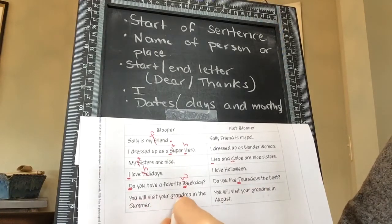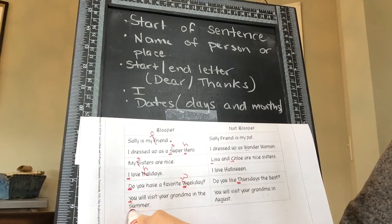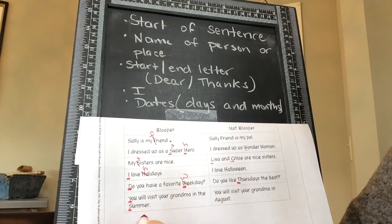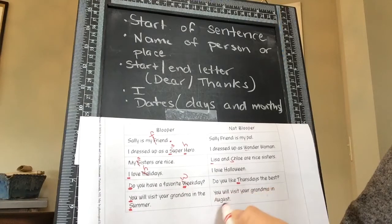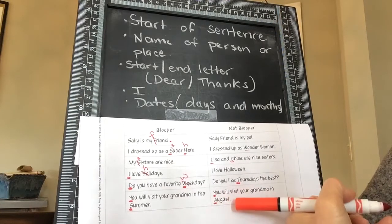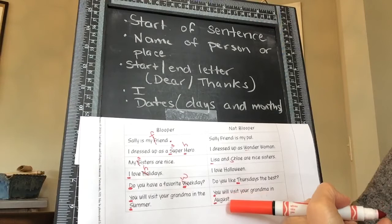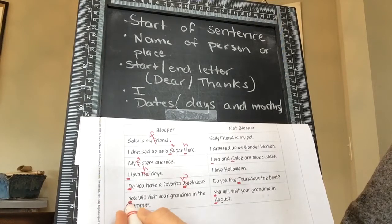Here we have, 'You will visit your grandma in the Summer.' You've got the Y in 'you' uppercase and the S in 'summer' uppercase. Then it says, 'You will visit your grandma in August.' The Y in the beginning of the sentence and the A in August are uppercase. That's correct because August is the proper name of a month. But does the S in 'summer' need to be uppercase? No, the season does not need to be uppercase.